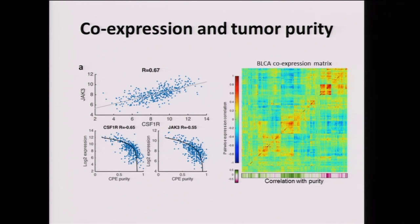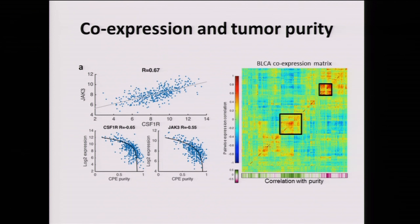When we do this for all genes in bladder cancer, the heatmap of pairwise gene correlations shows some large clusters. One big cluster appears to be a coexpression network, but adding the purity layer reveals that all genes in that cluster are simply highly positively correlated with purity. On the other side, there is another strong cluster where all genes are highly negatively correlated with purity — those are immune genes — which is why we see them as correlated. Using partial correlations removes at least 50% of the significant correlations.